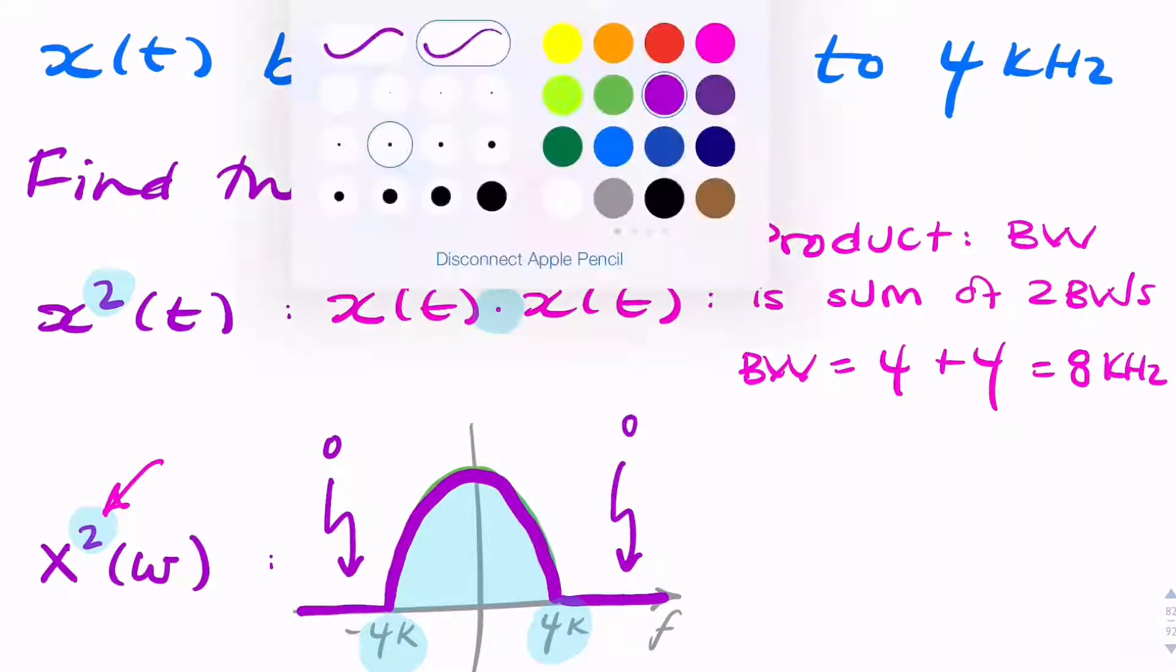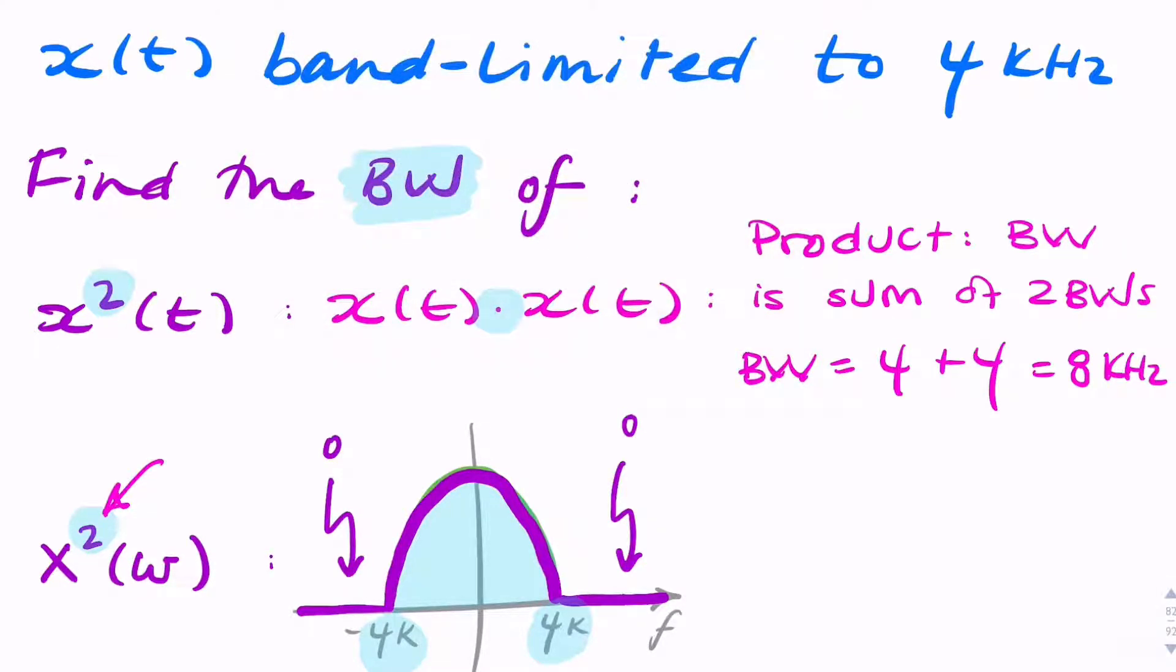So the perhaps unsurprising result is that the bandwidth is equal to 4 kHz. Nothing's changed. By squaring the spectrum, the bandwidth doesn't change.